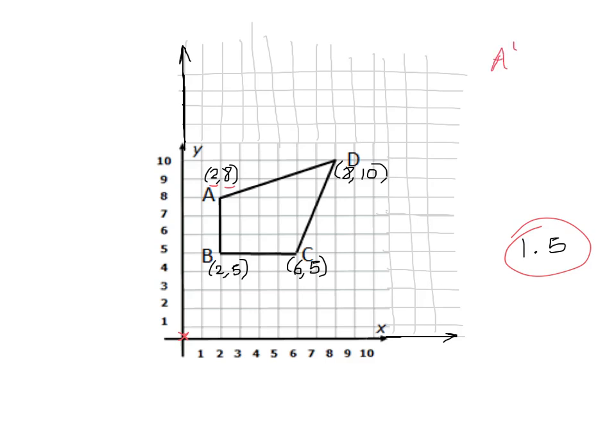So the coordinates of A is 2 and 8. So A prime will be 2 times 1.5 is 3, and 8 times 1.5 is 12. So our new A will be at 3, 12. And excuse the funky looking coordinate plane here. I had to extend it to make it larger so it would fit. So that is where our new A will be. So let's label that A prime.